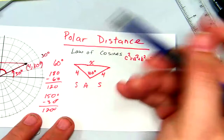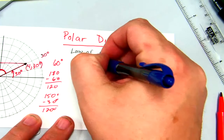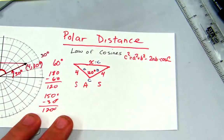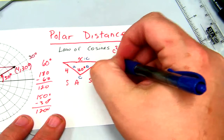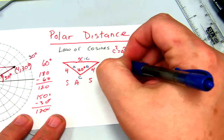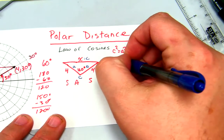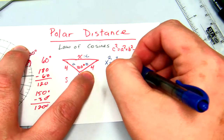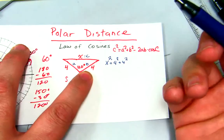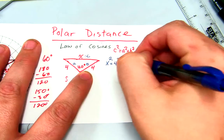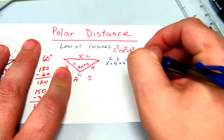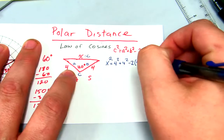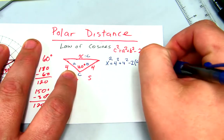In this picture, x is my c, the two sides of 4 are a and b, and 120° is angle C. So I get: x squared equals 4 squared plus 4 squared minus 2 times 4 times 4 times the cosine of 120 degrees.